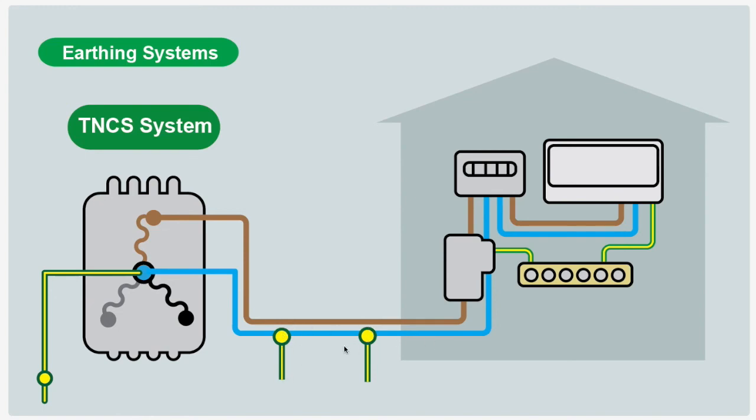the ground along the route to make sure that this neutral is earthed and limit the chance of it breaking and causing an issue where everything can rise to mains potential because of a broken neutral. So that's the TNCS system.